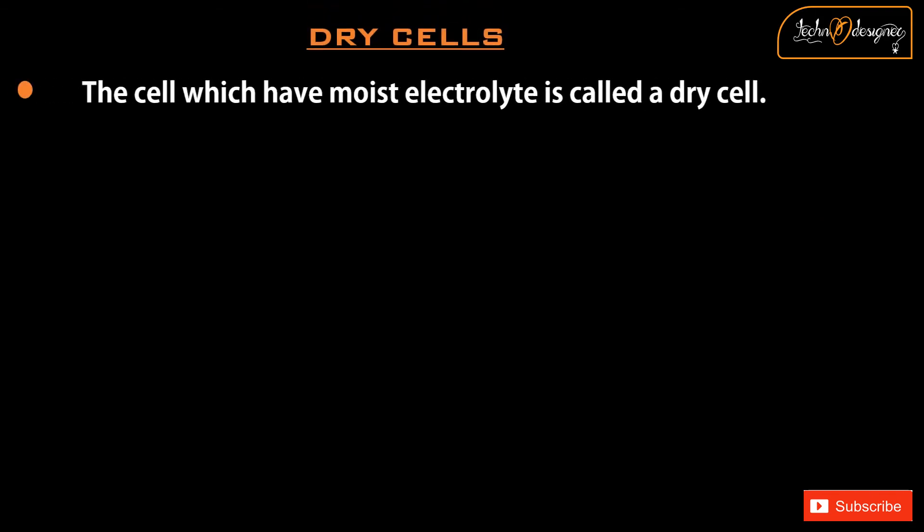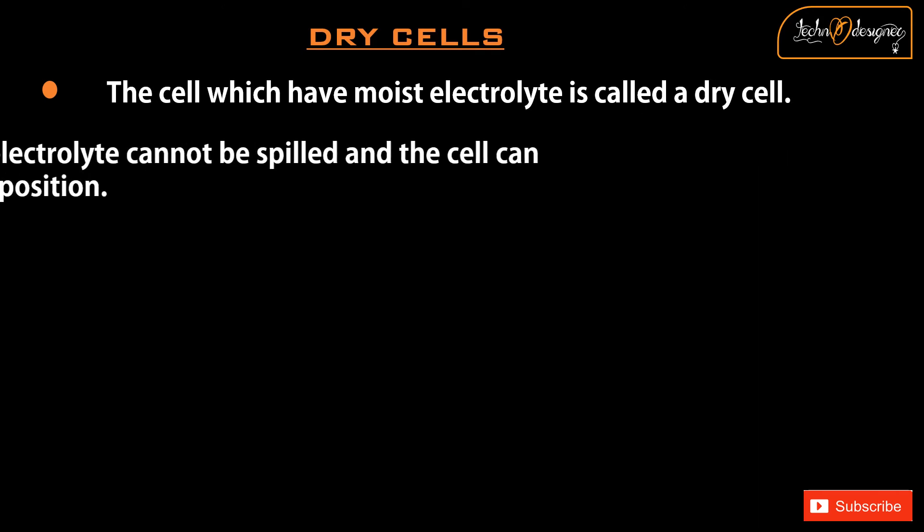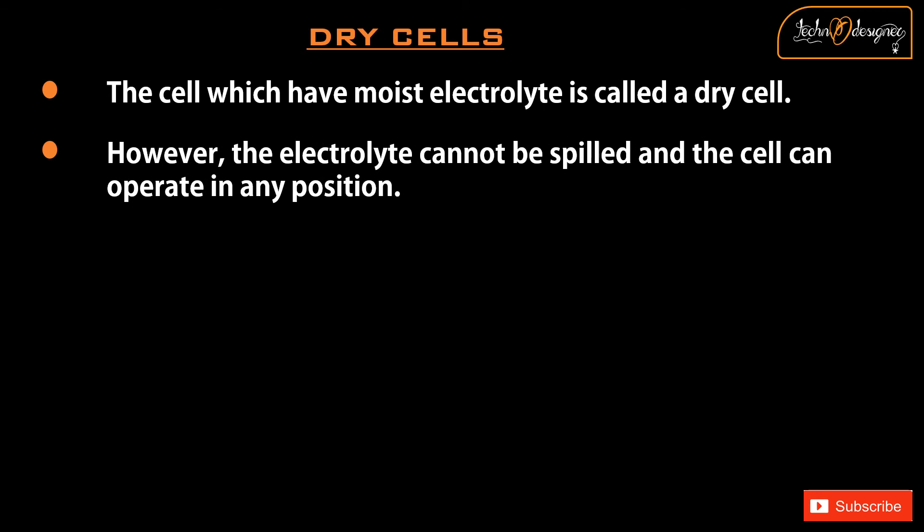Dry cells: The cell which has a moist electrolyte is called a dry cell. However, the electrolyte cannot be spilled and the cell can operate in any position.